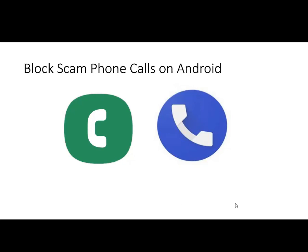Now we're going to cover blocking scam calls for Android. On Android Samsung phones, you can also block scam calls or anyone you don't know. There are two icons shown on screen because some Android Samsung phones have a green phone app and others have a blue one — whichever one you have on your phone, just tap on it. This is Android, so we're taking a break from iPhone right now.